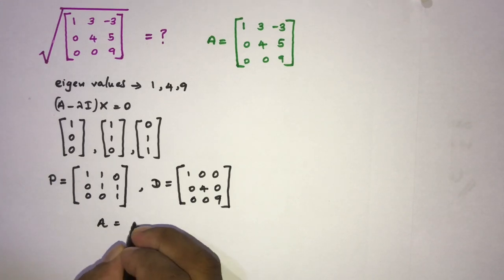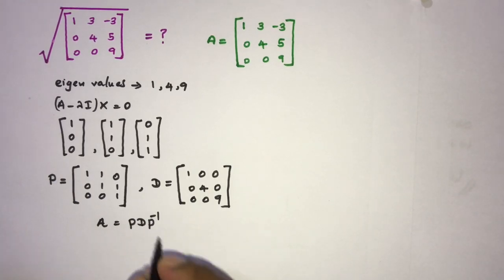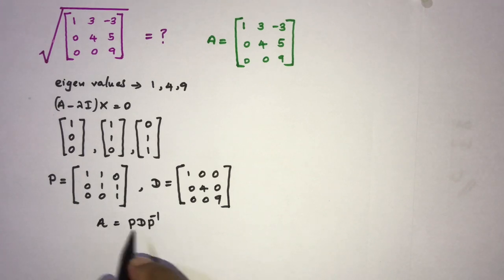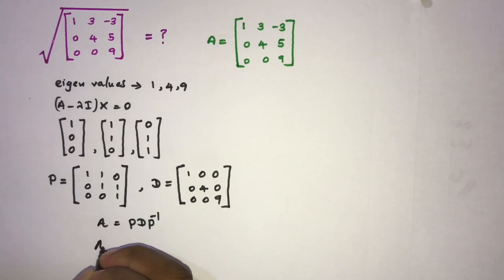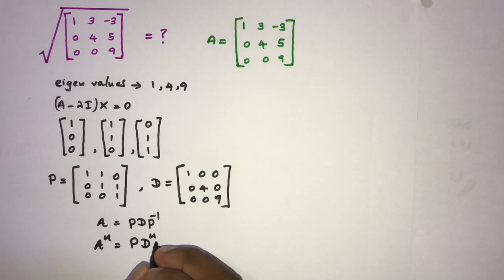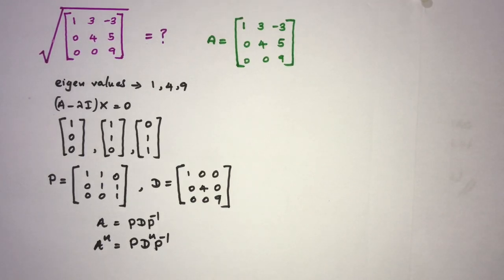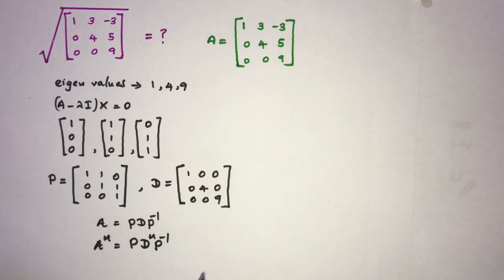We know A is equal to PDP⁻¹. We talked about this formula in previous videos. So if we raise A to the power n, we know this is equal to PD^n P⁻¹.